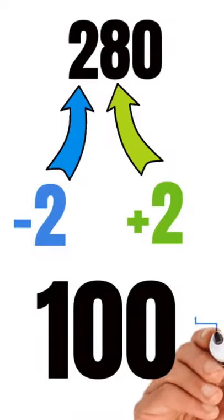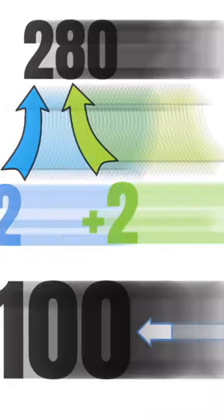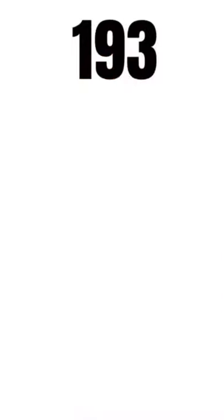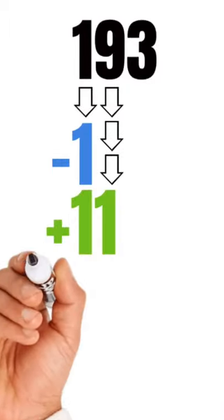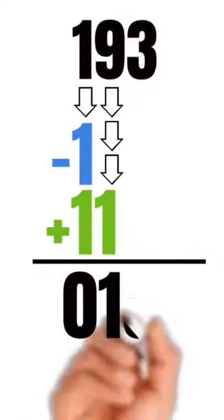And for both situations, that last digit remains the same. Now sometimes when you subtract 2 from this first number, you'll get a negative 1. But don't worry, when you carry the 1 by adding 2 to that second number, these two 1s will cancel each other out.